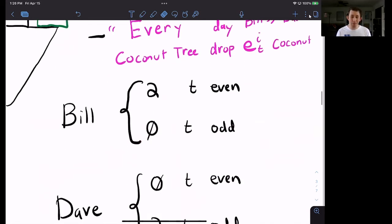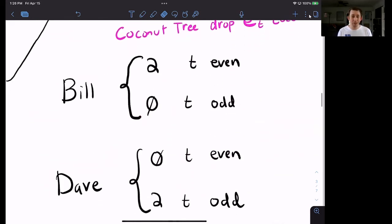And for the problem that we are going to solve, we are going to do the same as the Arrow-Debreu, where Bill gets two coconuts in even periods, zero in odd periods, and Dave gets the opposite.